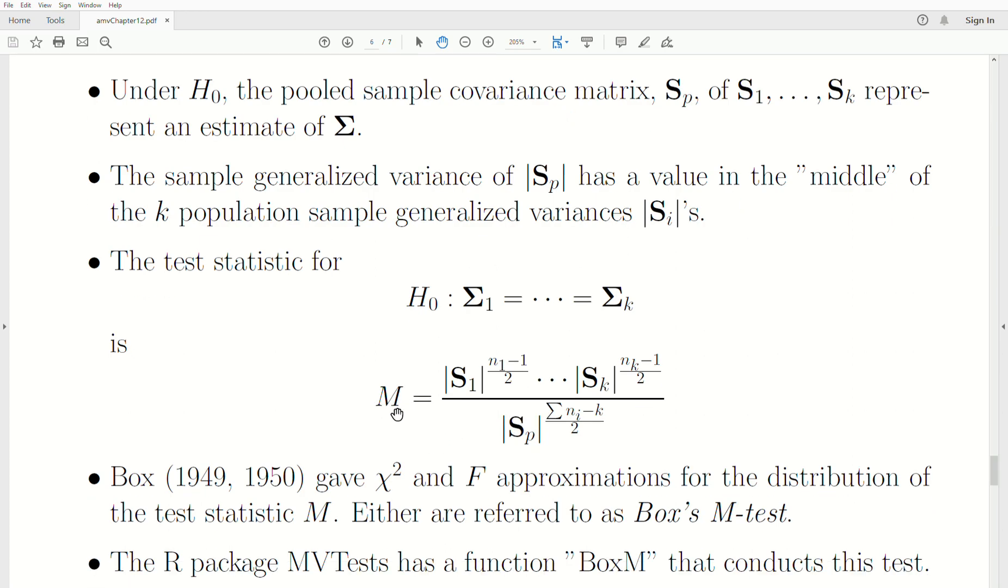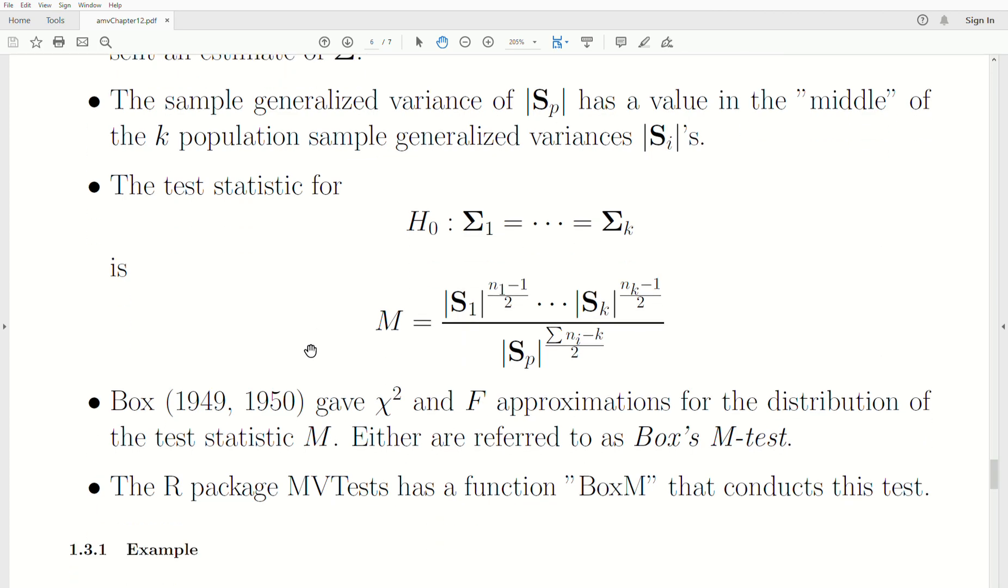And so minus two times the log likelihood of this is distributed as a chi-squared. And that's contributed to a statistician Box. And he gave approximations for the chi-squared and F for this distribution of the M. And both are referred to as Box's M-test.